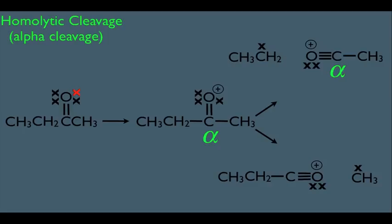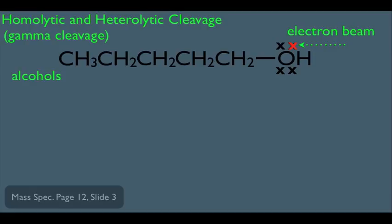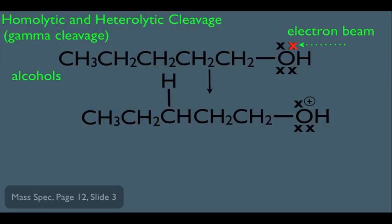However, there are also additional types of cleavage. This type involves both homolytic and heterolytic cleavage, and it's very specific to alcohols. Another name for this type of cleavage is gamma cleavage. Again, it starts off with the electron beam dislodging one of the electrons on the oxygen, giving rise to this particular molecular ion. Notice I'm emphasizing the gamma hydrogen on this molecule. Using the same nomenclature: this is the alpha carbon connected to the oxygen, that would be the beta, and this would be the gamma carbon. So we're looking at the hydrogen connected to the gamma carbon.